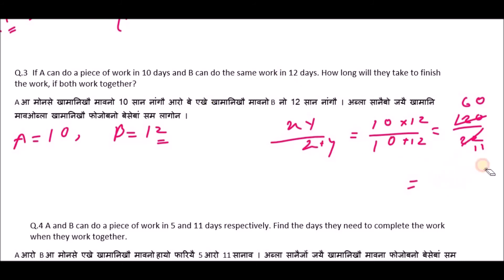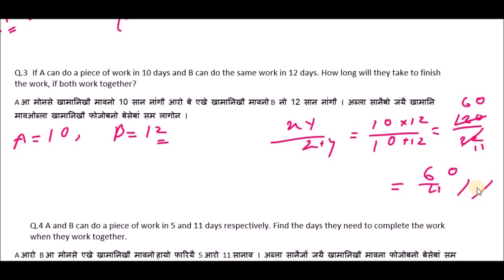So the answer is 120 divided by 22, which simplifies to 60 by 11 days.